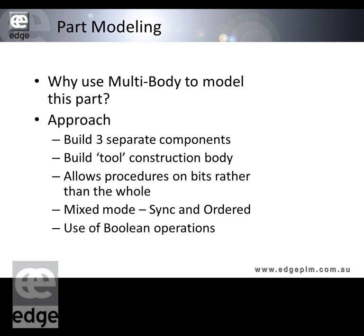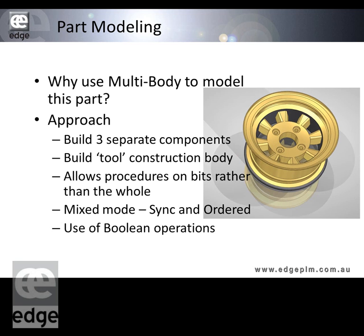In this example, we'll be building three separate components. We'll build a tool construction body. The three separate components will be a rim, a hub, and the support ribs. There'll be a construction body to make a shape on the face of some of the objects. This will allow us to apply procedures on these various bits rather than on the whole. We'll use some mixed modes — synchronous and ordered — and Boolean operations fairly extensively.